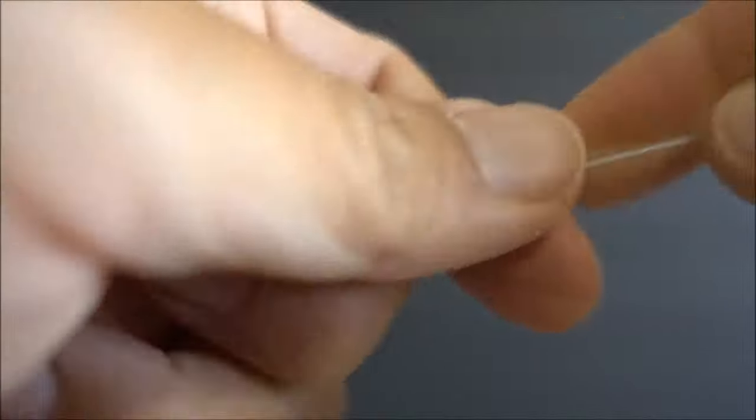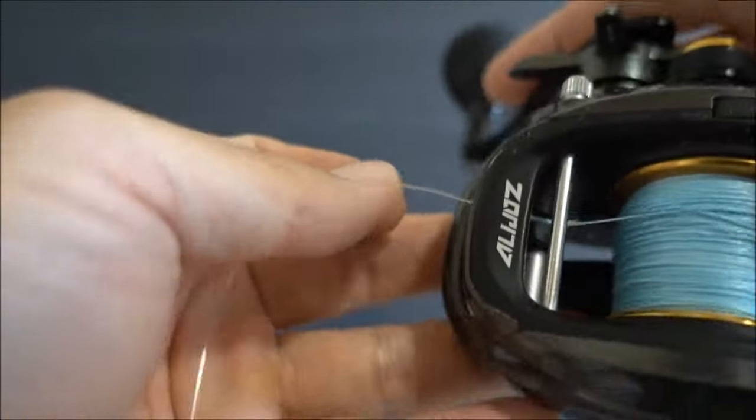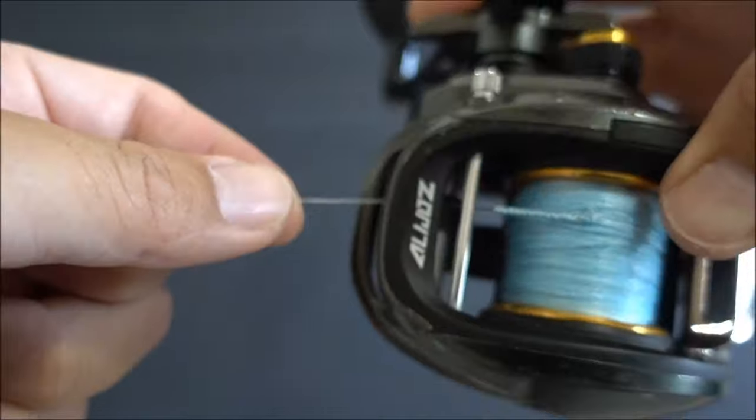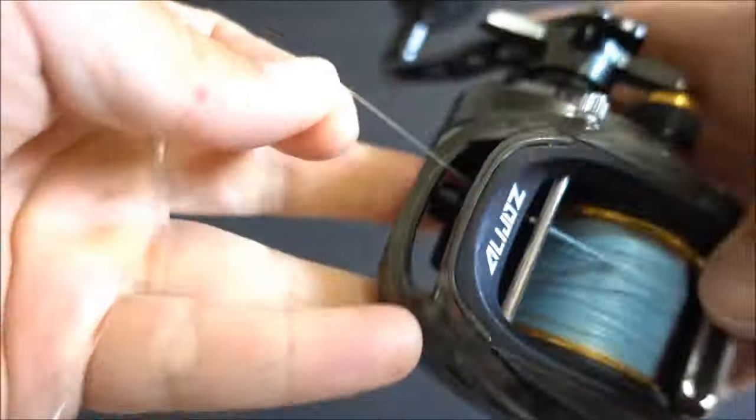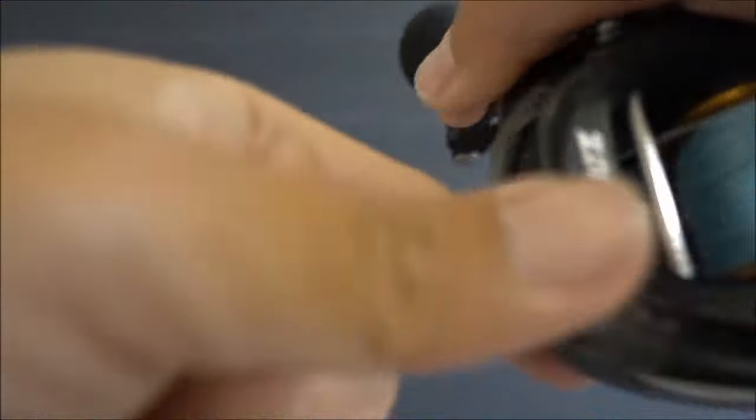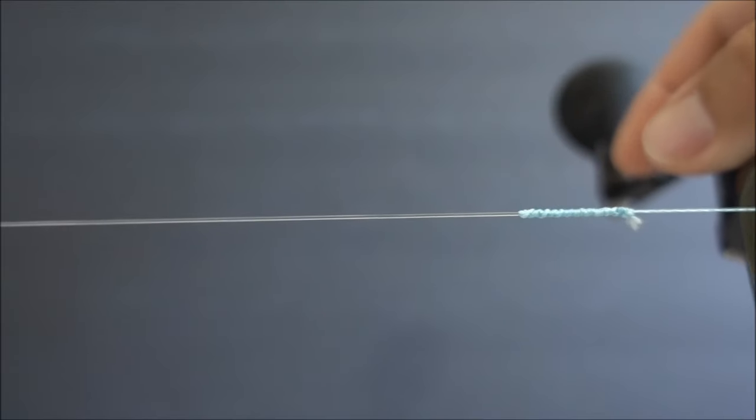Much easier than FG knot. So the diameter is very small, slightly bigger than FG knot, not small enough to fit through the line guide of the reel. There you go. I know some people master the FG knot and they can tie the FG knot blindfolded. But I know a lot of people struggle with the FG knot. So if you are one of them, try the SC knot.